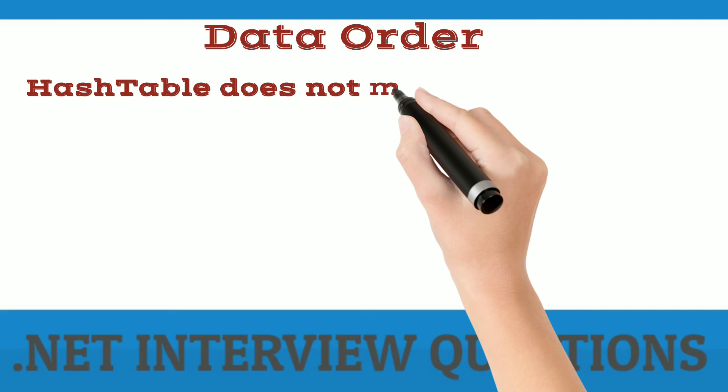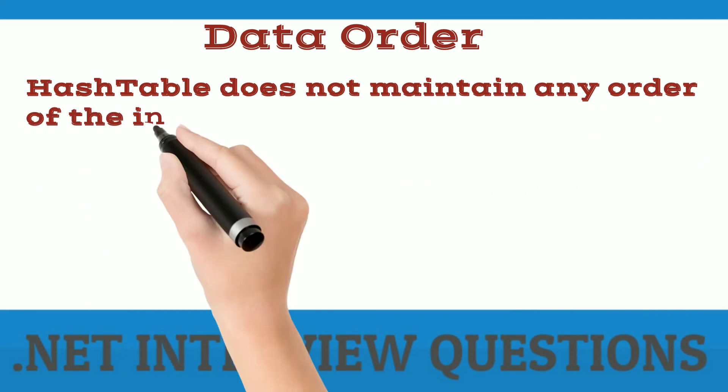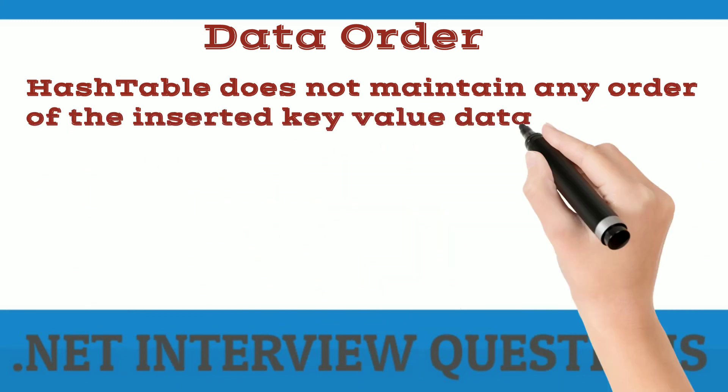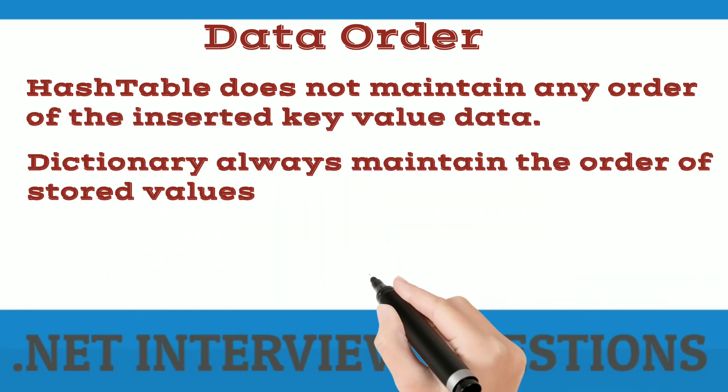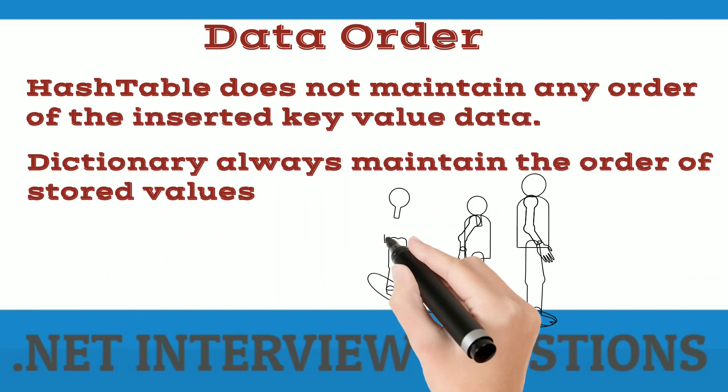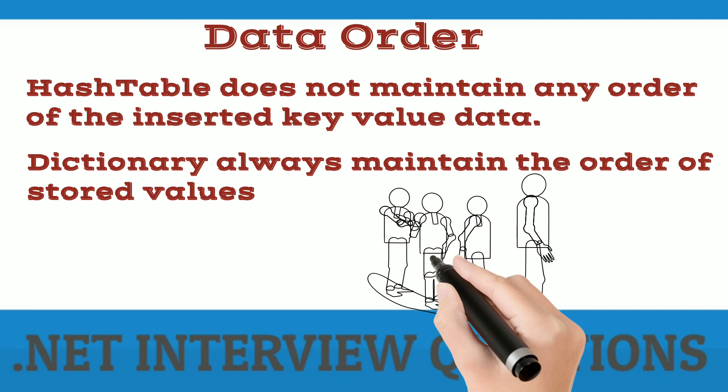Hash table does not maintain any order of the inserted key-value data. But dictionary always maintains the order of stored values.